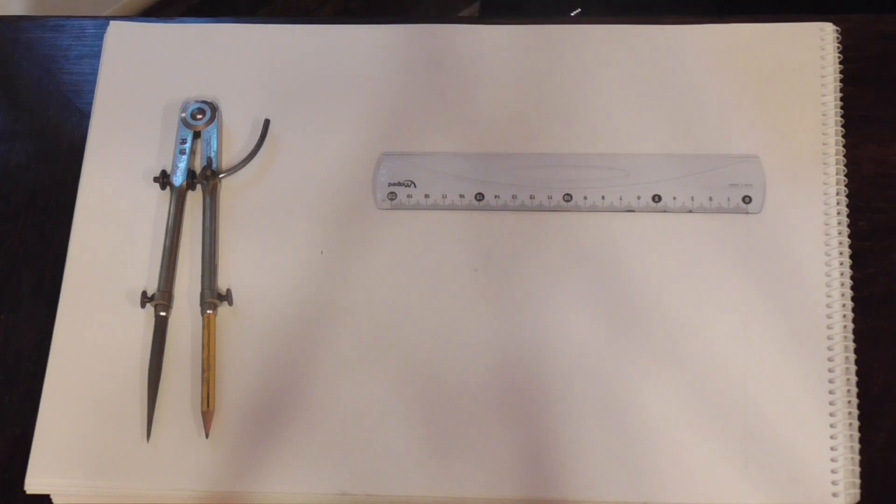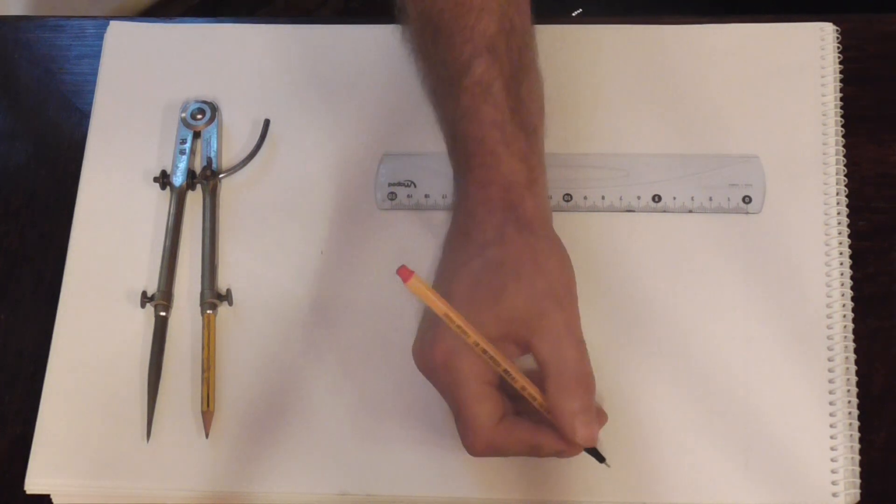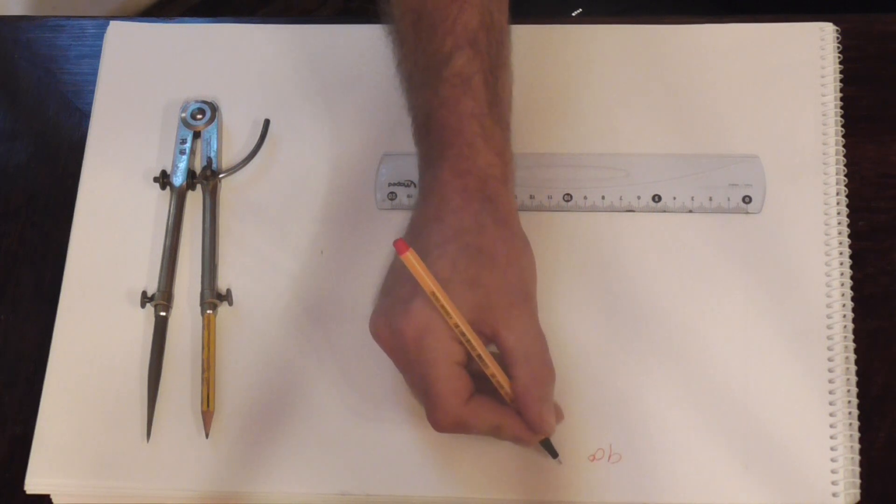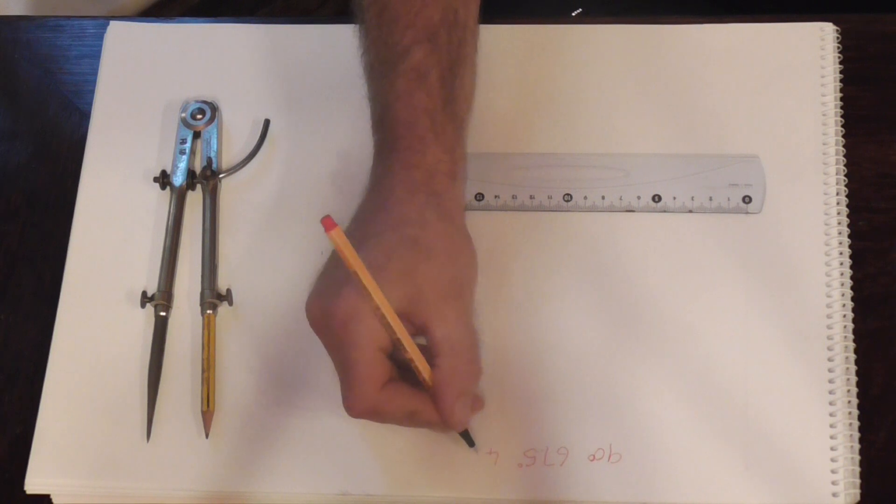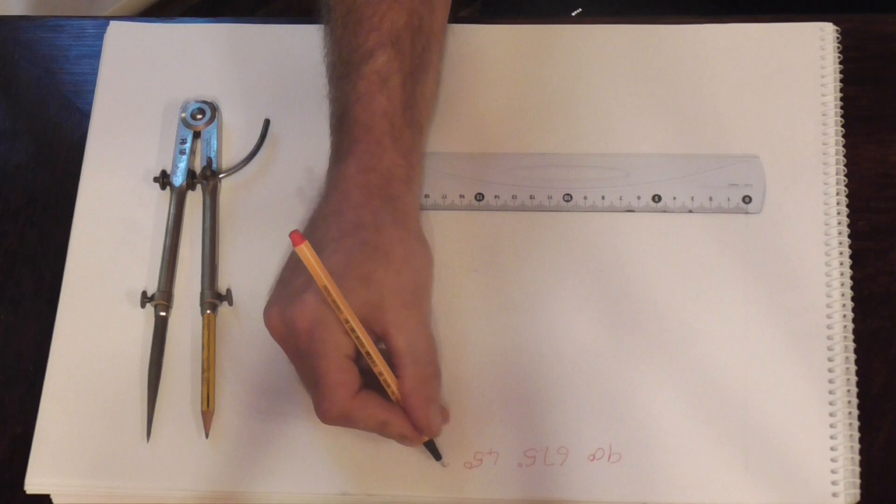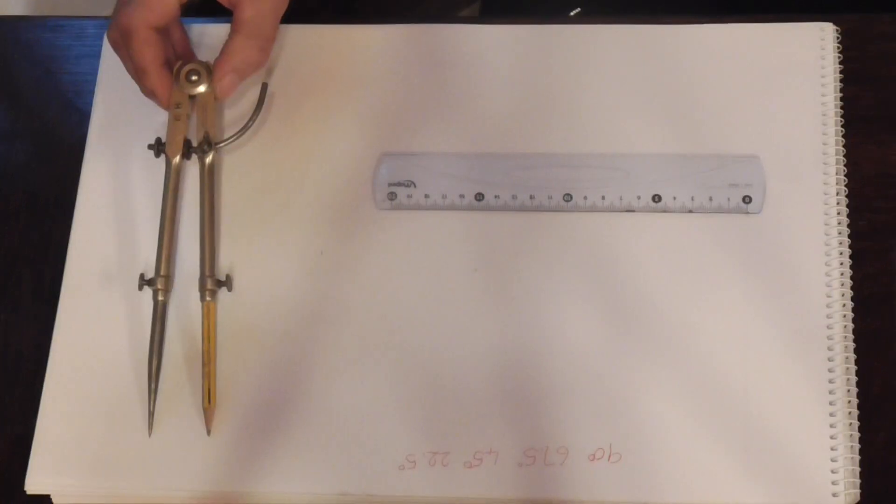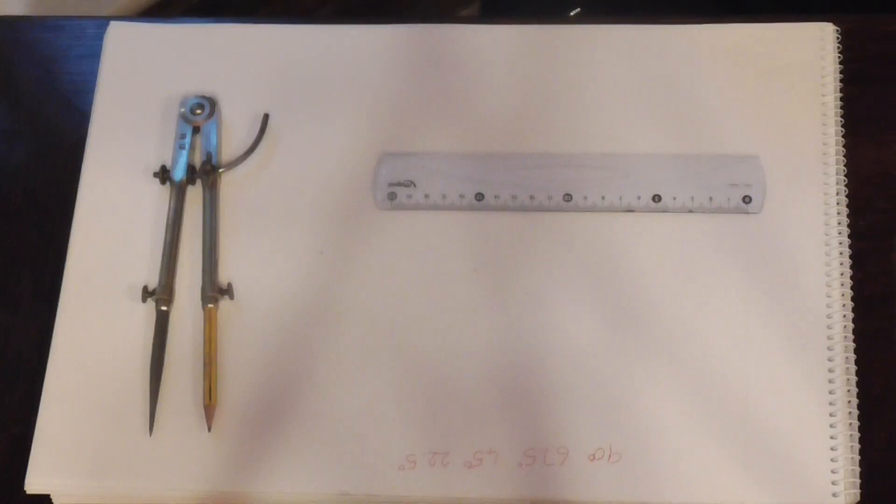The first part, the angles are going to be 90 degrees, 67.5 degrees, 45 degrees, and 22.5 degrees. We are going to do this by using our compass or dividers, and that is it.